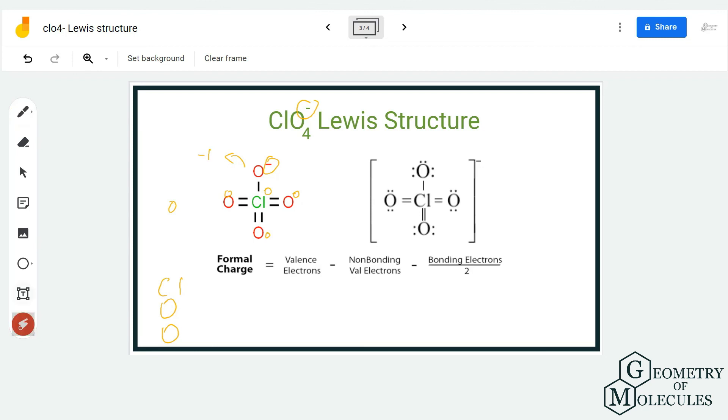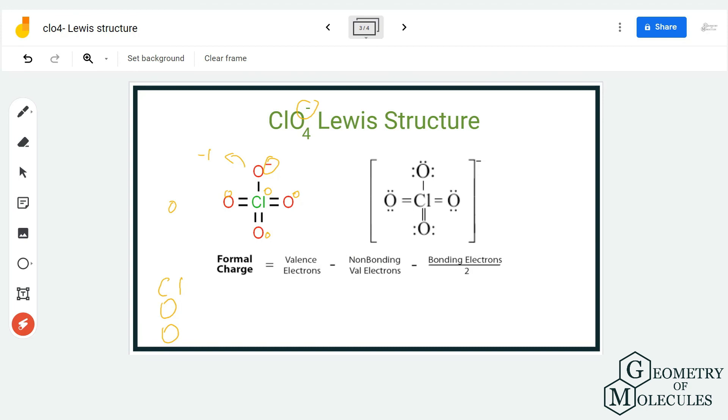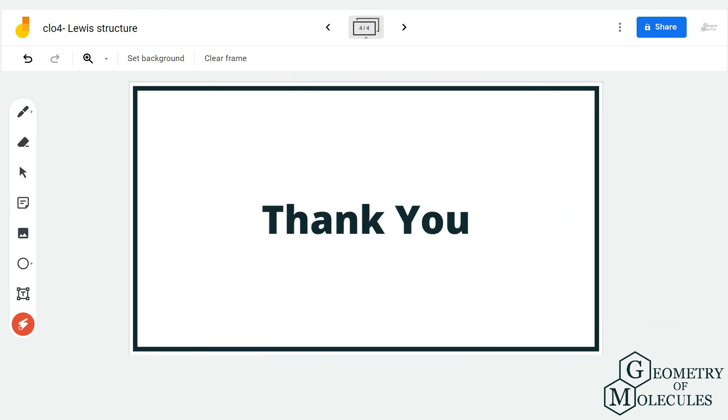Because it is an ion, you should put brackets around it and also mention its charge, because this is how we write the Lewis structures for ions. So this is the Lewis structure for ClO4 minus. I hope this video helps you to understand that easily. For more such videos on Lewis structure, molecular geometry, and polarity of molecules, make sure to subscribe to our channel. Thank you for watching.